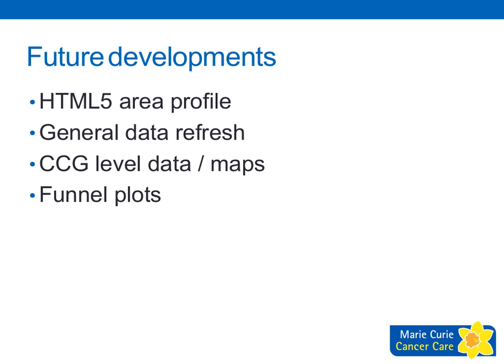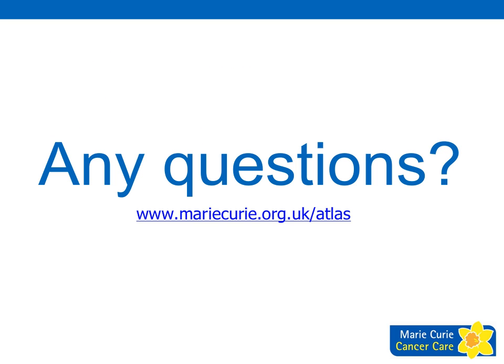In terms of future developments, we're looking to develop an HTML5 area profile. We want to keep doing general data refreshes of the Atlas. We don't have any CCG data at the moment, so it would be really great to have that in the future and upload new data as and when it comes in. We'd also quite like to develop some funnel plots to put on the Atlas to help check for bias and ensure accurate interpretations of the data. If you have any questions, I'm happy to answer them at the end, and the web address to the Atlas is also there so you can have a play around with the tool yourself.